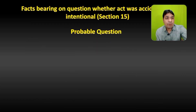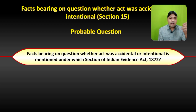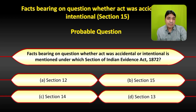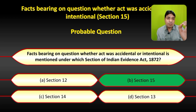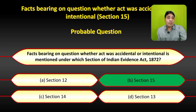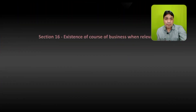Now, the probable exam question on Section 15: 'Facts bearing on the question whether an act was accidental or intentional is mentioned under which section of the Indian Evidence Act?' — Section 12, Section 15, Section 14, or Section 13? The correct answer is Section 15. Under Section 15, facts can be proved to establish whether an act was accidental or intentional.